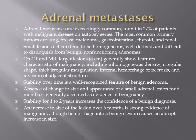Adrenal metastasis is exceedingly common, found in 27% of autopsy series. Small lesions less than 4 cm tend to be homogeneous and well-defined, making distinction from benign adenoma difficult. On CT and MRI, lesions larger than 4 cm generally show features of malignancy: non-homogeneous density, irregular shape, thick irregular margins, internal hemorrhage and necrosis, and invasion of adjacent structures. Common primary sites include lung, breast, melanoma, gastrointestinal tumors, thyroid, and renal cancer. Stability over 6 to 12 months is accepted as evidence of benignancy; increase in size or change over 6 months suggests malignancy.